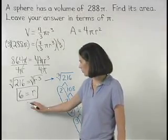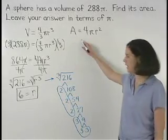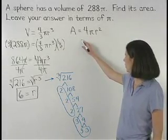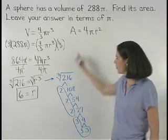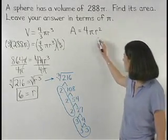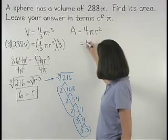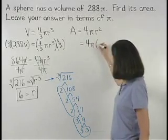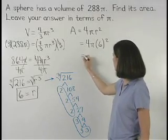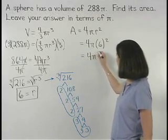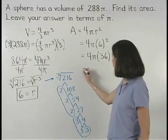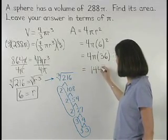Now that we know the radius of the sphere, we can find the area of the sphere, which is 4 pi r squared, by plugging in 6 for r in the formula. And we have 4 pi times 6 squared, which simplifies to 4 pi times 36, which equals 144 pi.